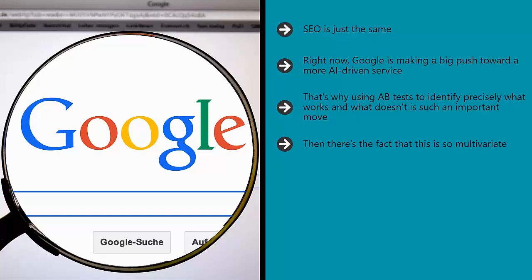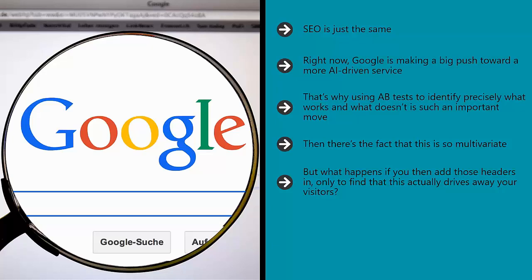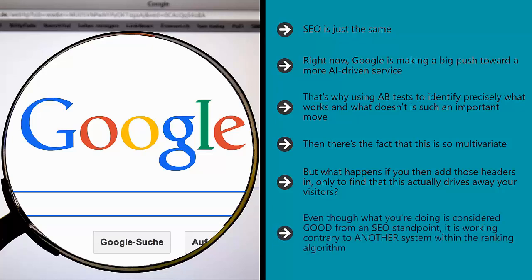Then there's the fact that this is so multivariate. For example, it might be that Google would prefer you to use a number of headers in your content with keywords in a perfect world. But what happens if you then add those headers in, only to find that this actually drives away your visitors? That alone is useful information you could garner from a split test. But it's also possible that in driving away visitors, you send negative signals to Google and end up hurting your ranking — even though what you're doing is considered good from an SEO standpoint, it is working contrary to another system within the ranking algorithm. When you take all of that into account, it becomes less obvious what you should do, and this makes it all the more useful to just test it and see what actually works.